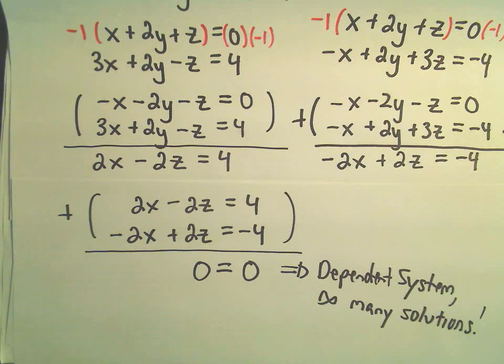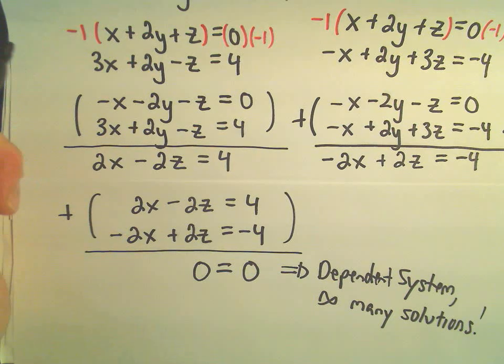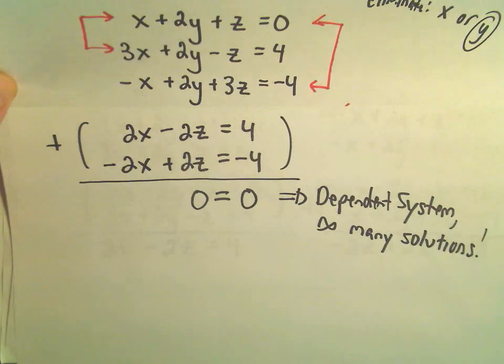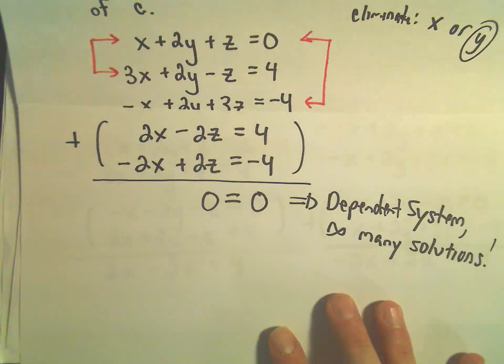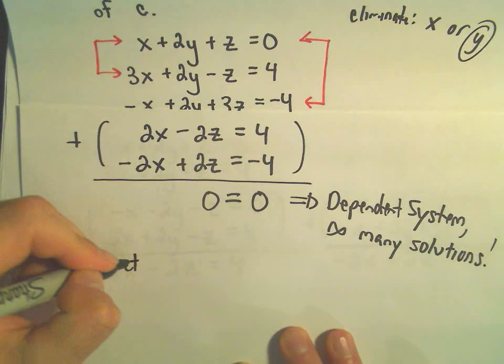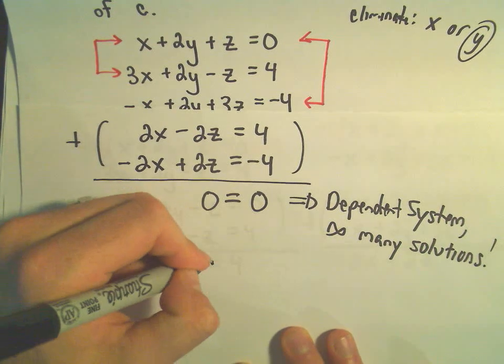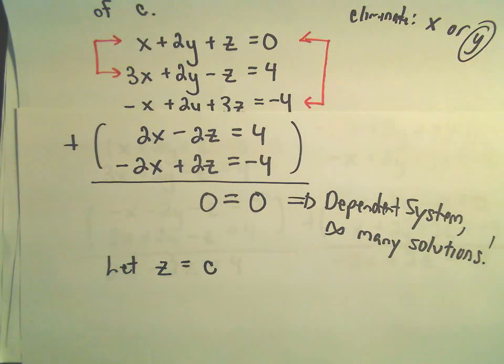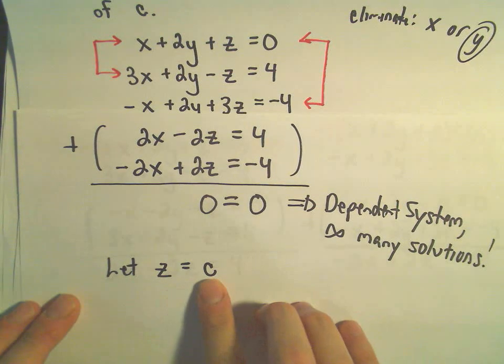And that means there's infinitely many solutions. Okay, so now the question kind of is, well, how do we express the solution? Well, typically what you'll do is you'll just let one of the variables. We'll just say suppose that variable, suppose we pick some constant. And in this case, we're letting z equal some constant, c. Now we're just going to go back to our equations and figure out what the other variables would be in terms of c as well.